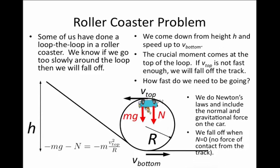Now, when will we fall off? We fall off when there is no normal force pushing on the bottom of the wheels of the cart. When we set N equals zero, that's equivalent to the condition where we're about to fall off the tracks. In this case, we have an expression for what v_top is: v_top squared equals g times r.